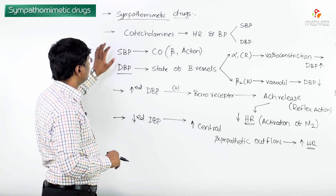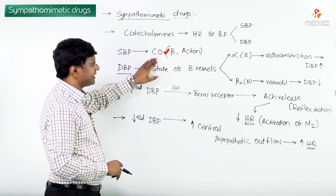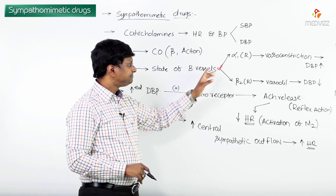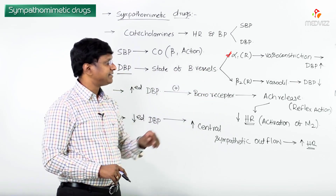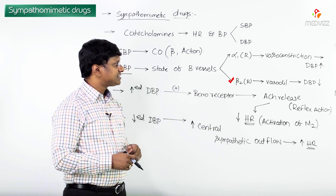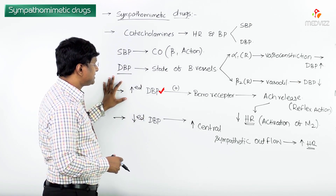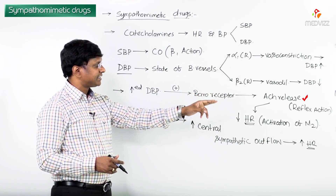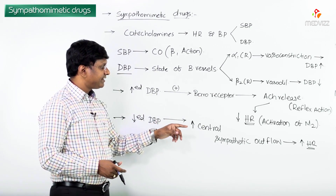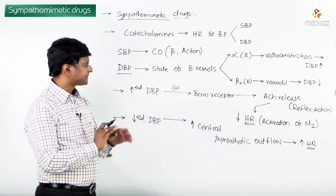To summarize the variations in diastolic blood pressure: systolic blood pressure is mediated by cardiac output, that is beta-1 receptor action. Diastolic blood pressure completely depends upon the state of the blood vessels — alpha-1 receptor activation causes vasoconstriction and increases diastolic blood pressure; beta-2 receptor activation causes vasodilation and decreases diastolic blood pressure. Whenever there is an increase in blood pressure, there will be reflex release of acetylcholine that decreases heart rate. Whenever there is a decrease in diastolic blood pressure, there will be reflex activation of the sympathetic nervous system that increases heart rate.